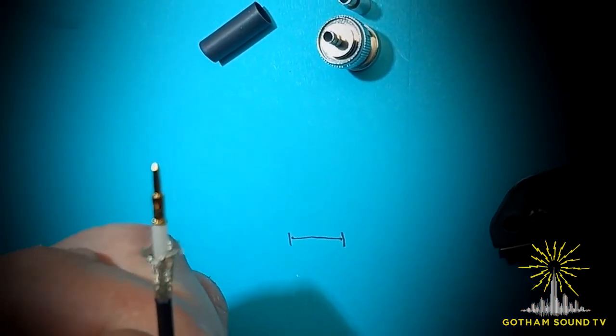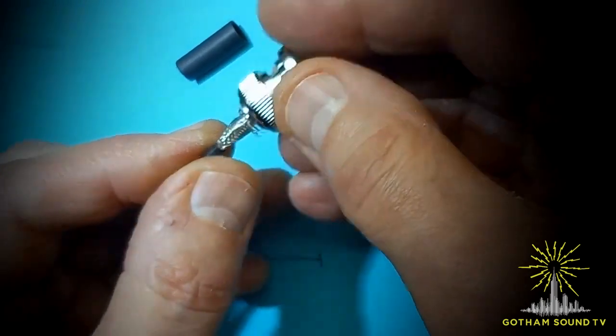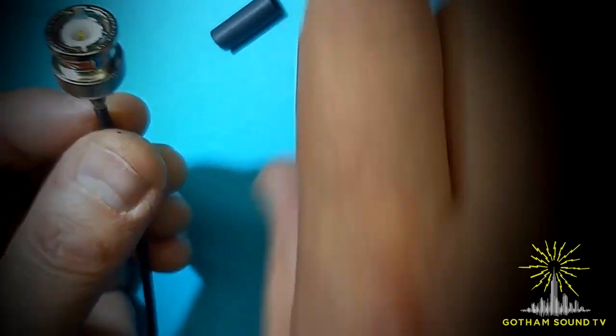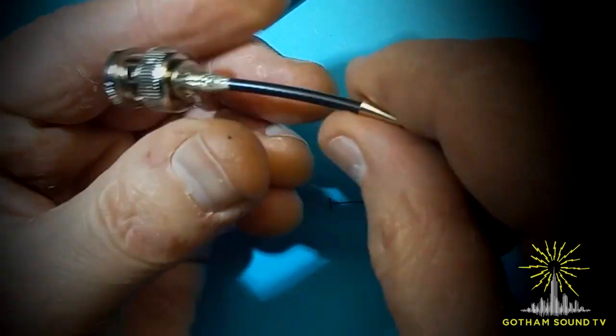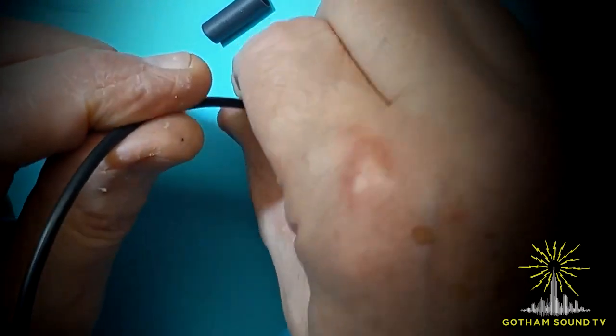Put on the connector shell and then crimp the outer sleeve. I usually crimp it two times, large and small ones, to make it more secure against pulling.